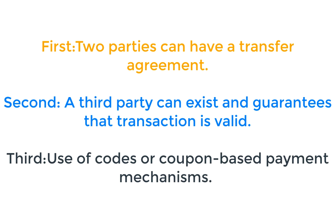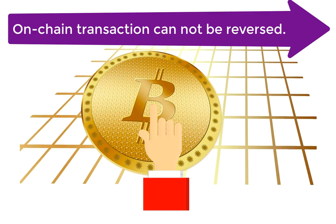Third is use of vouchers or coupon-based payment mechanisms. Vouchers or coupons can be exchanged with the crypto assets. On-chain transactions take some time to collect enough confirmations to ensure that they cannot be reversed. Bitcoin currently has a limit of 7 transactions per second.